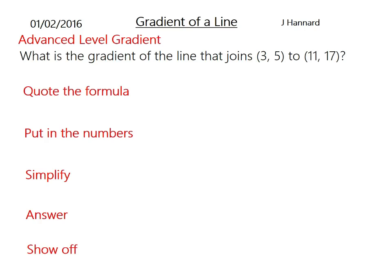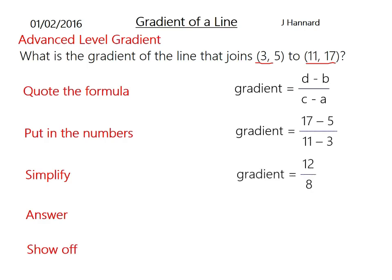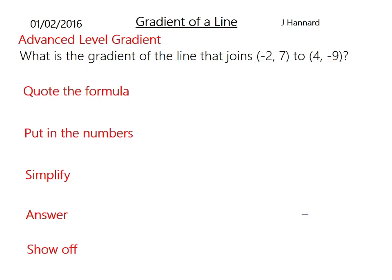What is the gradient of the line that joins (3, 5) to (11, 17)? Quote the formula: back take back over front take front, d minus b over c minus a. Put in the numbers: 17 minus 5 over 11 minus 3. So that is 12 over 8, which can cancel down to 3 over 2. If you want to show off, you can put the perpendicular gradient of minus 2 thirds, but it won't score you any more points in an exam.